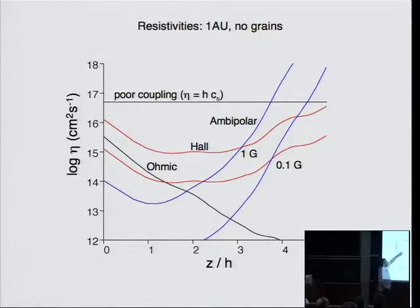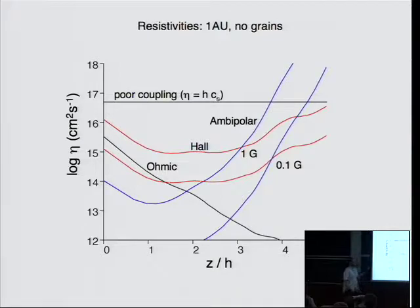Then you can evaluate the resistivity components. Firstly, look at the black curve. This is the ohmic resistivity. It doesn't depend on the magnetic field that you assume. For the other two components, we have to assume a magnetic field. So I've just given two curves for each. The ambipolar diffusivity in blue for one gauss or 0.1 gauss, and the Hall diffusivity in red again for one gauss or 0.1 gauss. The main thing to take away depends on the field that you assume. And it varies by a few orders of magnitude. Everything varies by a few orders of magnitude over the disk thickness.